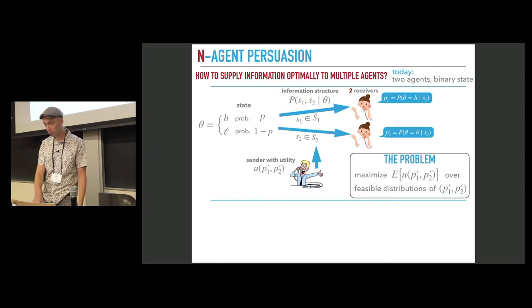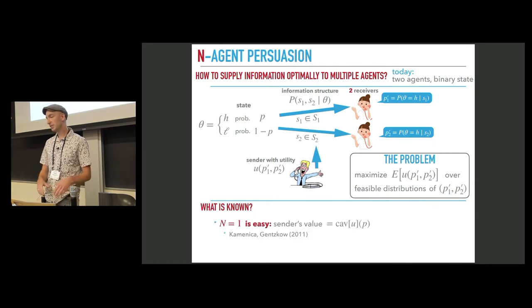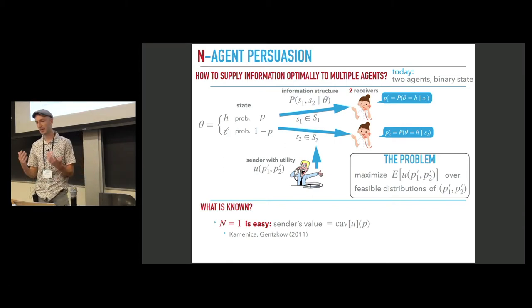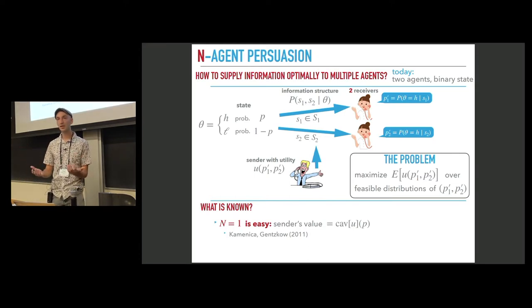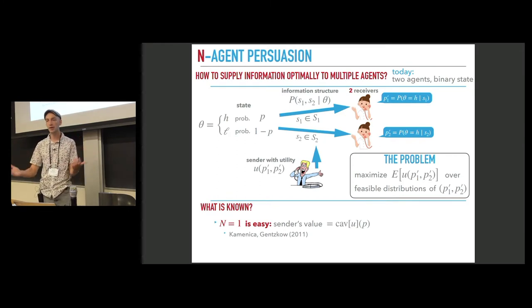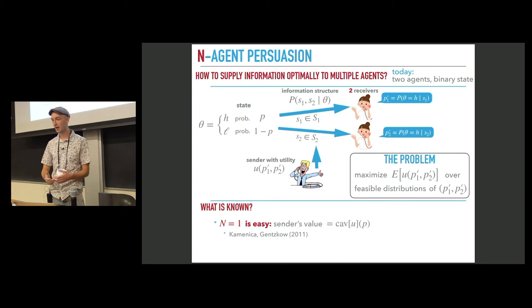So what is known about this problem? If we have just one receiver, the problem is easy as was obtained by Kamenica and Genskov. They realized that the set of feasible distributions in this case has simple structure. As a byproduct of this observation, the problem has an explicit solution and the sender's optimal value admits an explicit closed form formula.